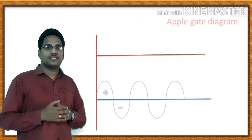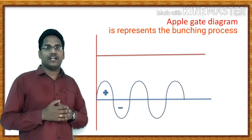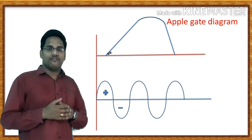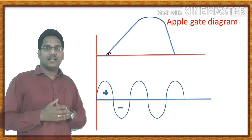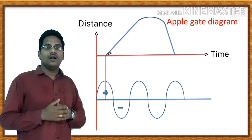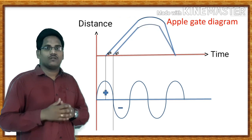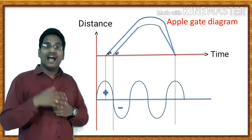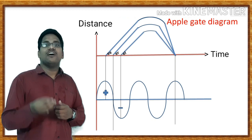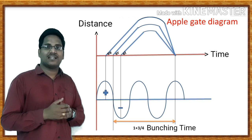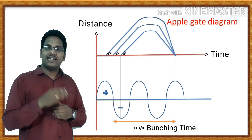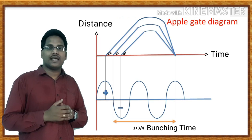The Applegate diagram is used to represent the bunching process and is also called a wave diagram. The process of bunching involves three categories of electrons: early electrons, reference electrons, and late electrons. The x-axis represents time and the y-axis shows the distance traveled by the electrons. Bunching takes place at the time of the return journey of the electrons. In the case of early electrons, due to very high velocity, they require more time to ripple back. The reference electrons require less time to ripple back towards the catcher cavity than the early electrons. The late electrons have very low velocity and take a minimal amount of time to ripple back towards the catcher cavity.